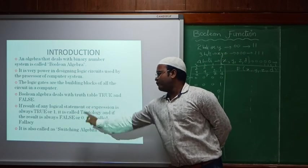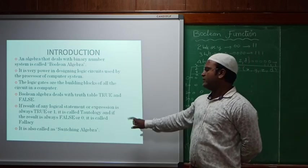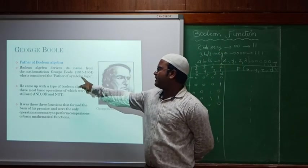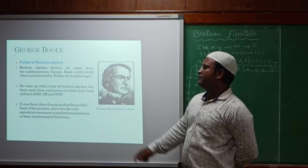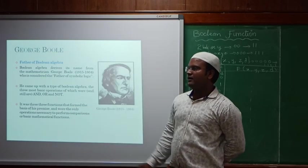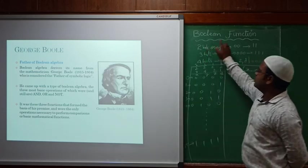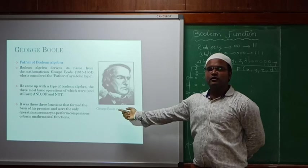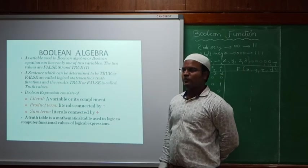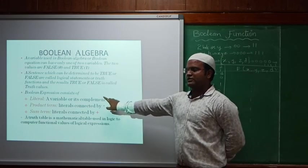If we want to write a result or expression, true means one and false means zero. We don't want to write true and false multiple times, so we use the truth table notation. This is called switching algebra. George Boole started this — he explained from 1815 to 1864 an algebra derived from symbolic logic. He explained three gates which we have already discussed: AND, OR, and NOT. Based on those three functions he gave the complete description, so we call it Boolean function or Boolean algebra.